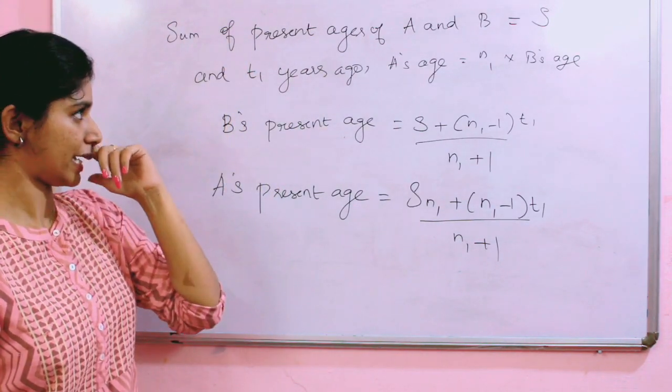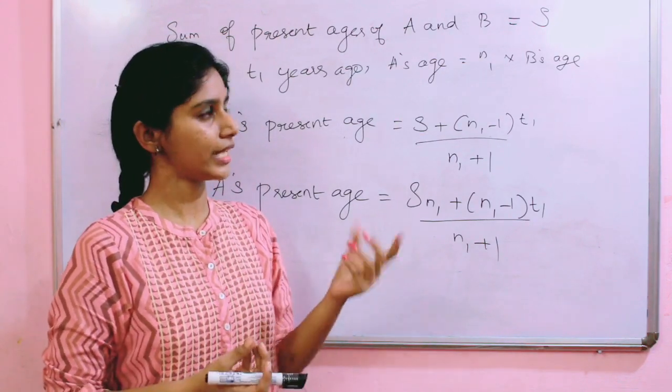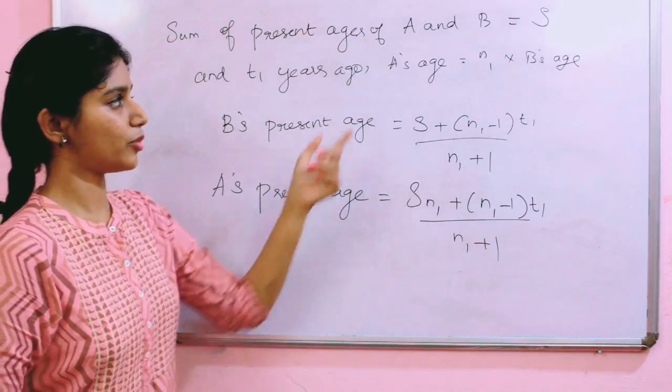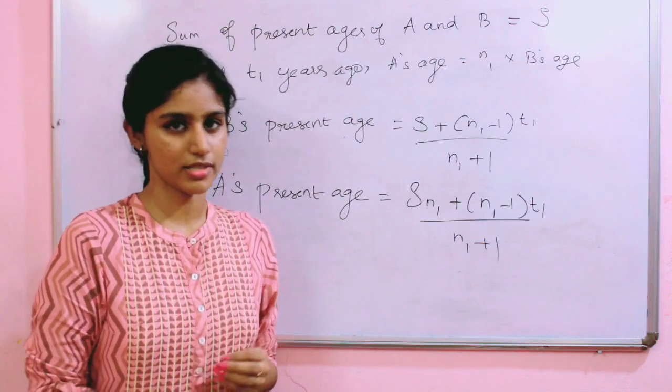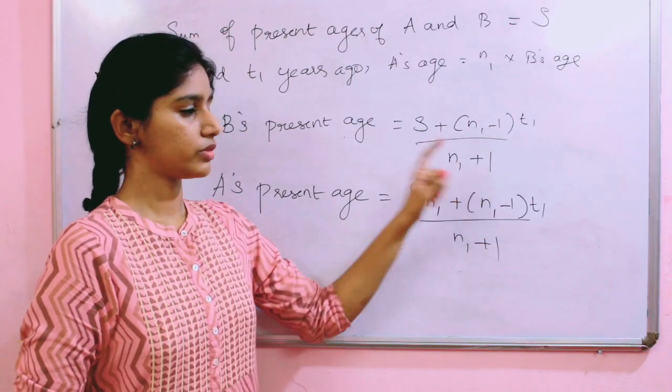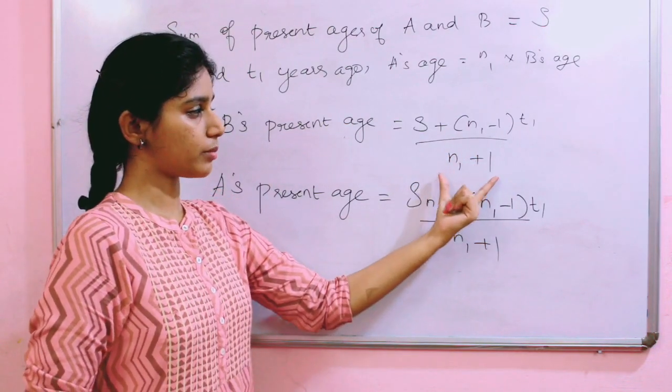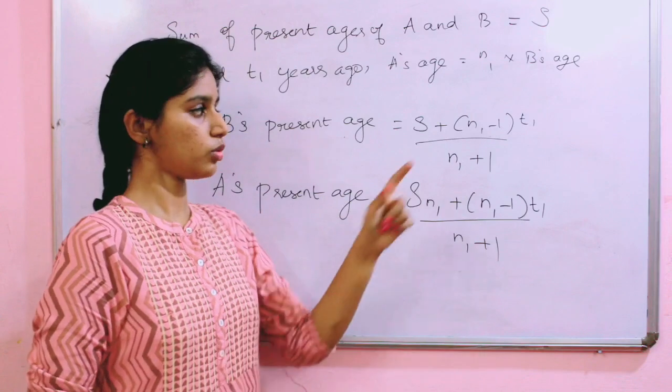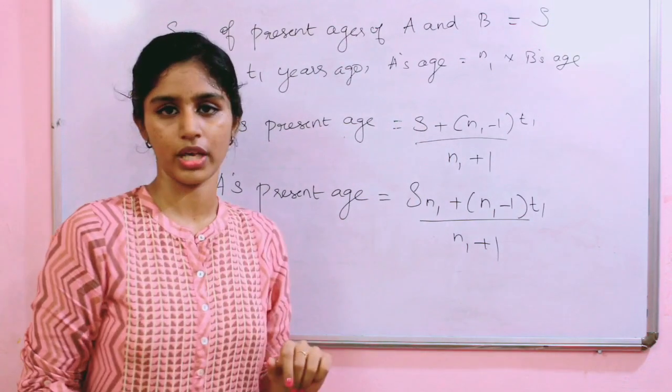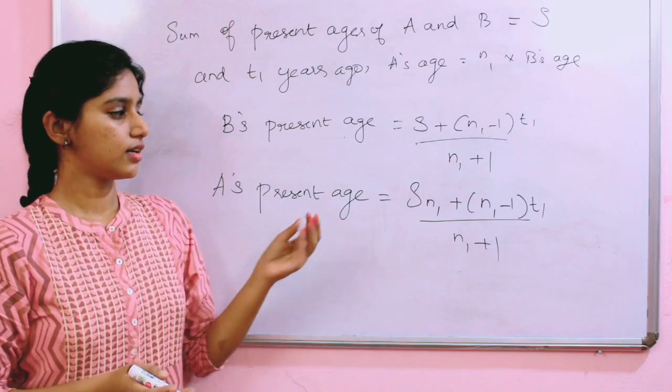Sum of the present ages of A and B equals S. T1 years ago, A's age was N1 times B's age. We use Rule 1: T1 equals N1 minus 1. B's age equals S plus (N1-1) times T1, divided by N1 plus 1. The sum of their ages adds out.